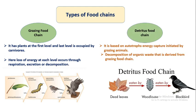The detritus food chain is based on autotroph energy capture initiated by grazing animals and the decomposition of organic waste derived from the grazing food chain. Dead leaves of plants are eaten by woodlice, which are then eaten by other organisms. In this way, other organisms get their food from the dead organic matter of plants.